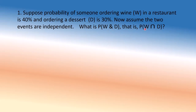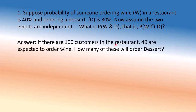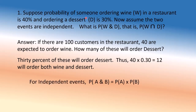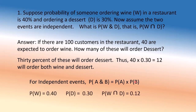What is P(W ∩ D) — the probability that somebody orders wine and dessert both? Suppose there are 100 customers; 40 are expected to order wine. Of those 40, since ordering dessert is independent, there's a 30% chance they will also order dessert — that means 12 people. For independent events, the probability of A and B equals P(A) times P(B). So 0.4 × 0.3 = 0.12. When events are independent, you simply multiply them. Similarly, the probability of tossing two coins and getting two heads is 0.5 × 0.5.